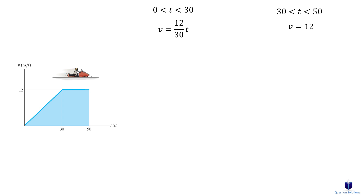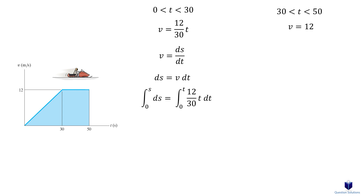Let's take a look at a quick example. In this question, we want to draw the position versus time graph. The equations for each segment are v equals 12 over 30 times t, and v equals 12. Remember that velocity is the derivative of position with respect to time, so write the equation as ds equals v dt. Most of the time, the object starts from rest and your lower bounds for the integral will be zero. Here, velocity is zero at t equals zero, which means it started from a displacement of zero meters. Take the integral of the first segment and we get 12 over 60 times t squared.